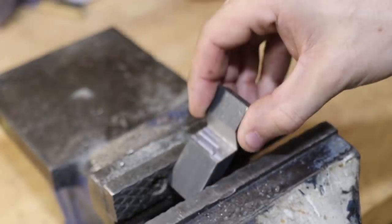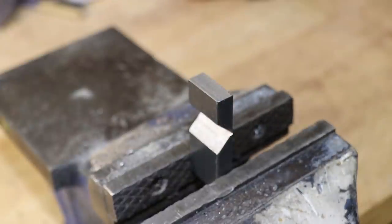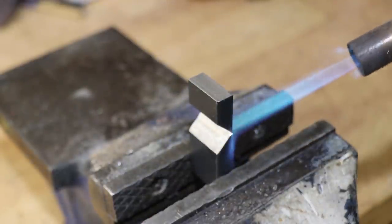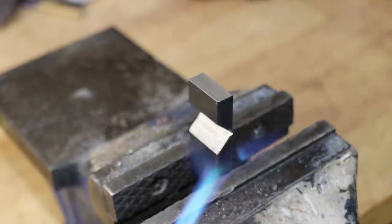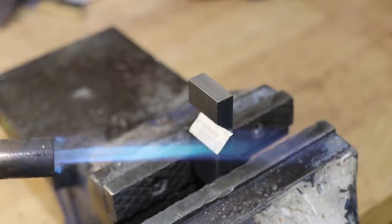I'll then heat it up with a torch and get the material soft so I can bend it. The last time I did this I was a bit impatient, and when I tried to bend it, the material was too cold and it cracked and broke off.